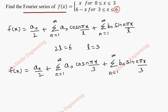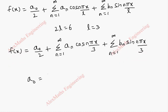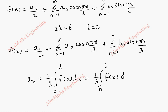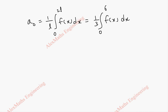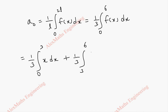Now, to find a0, we use the formula 1 by l integral 0 to 2l f of x dx, and l is 3. So, 1 by 3 integral 0 to 6 f of x dx. But our function f of x is made up of two parts: one is from 0 to 3, the other is from 3 to 6. One is x, the other is 6 minus x. So, we are going to split this integration into two parts: one is 1 by 3 integral 0 to 3 x dx, and the other is 1 by 3 integral 3 to 6 of 6 minus x dx.